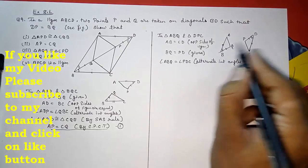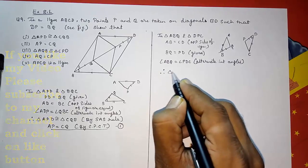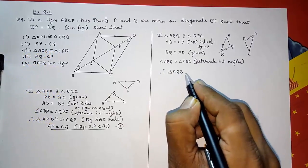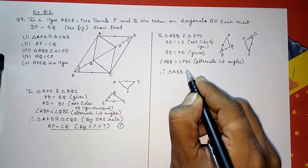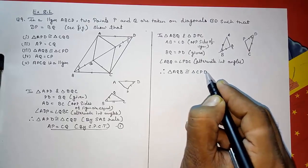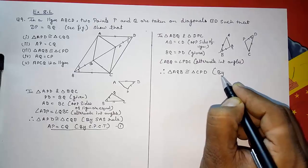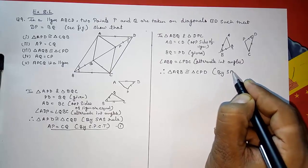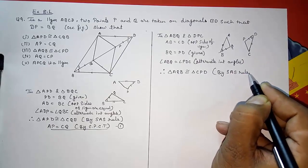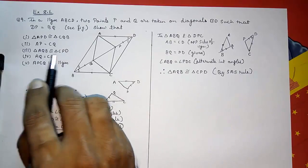Therefore we can say these two triangles are congruent. Triangle AQB is congruent to triangle CPD by the Side Angle Side rule. That is our third answer.